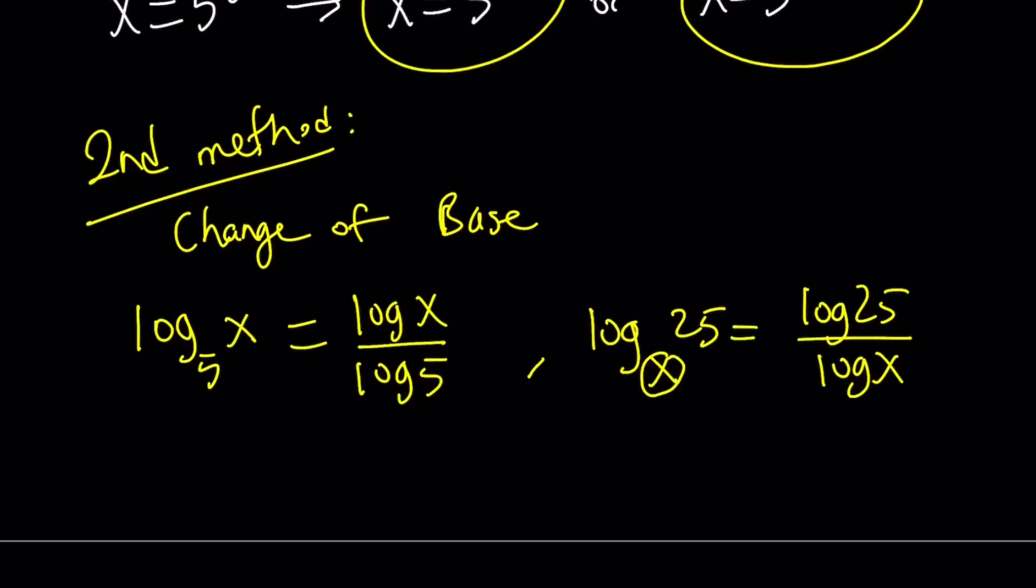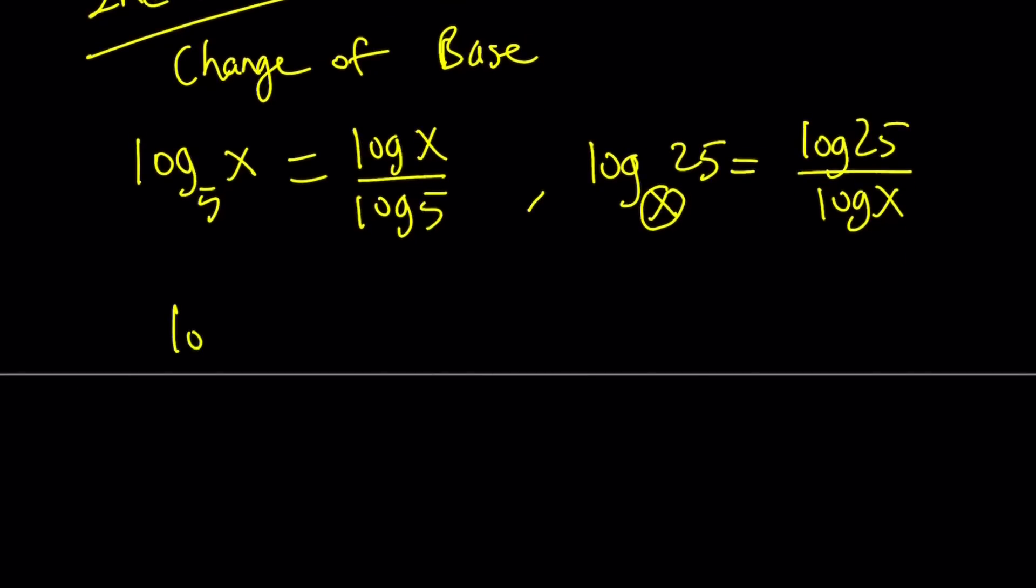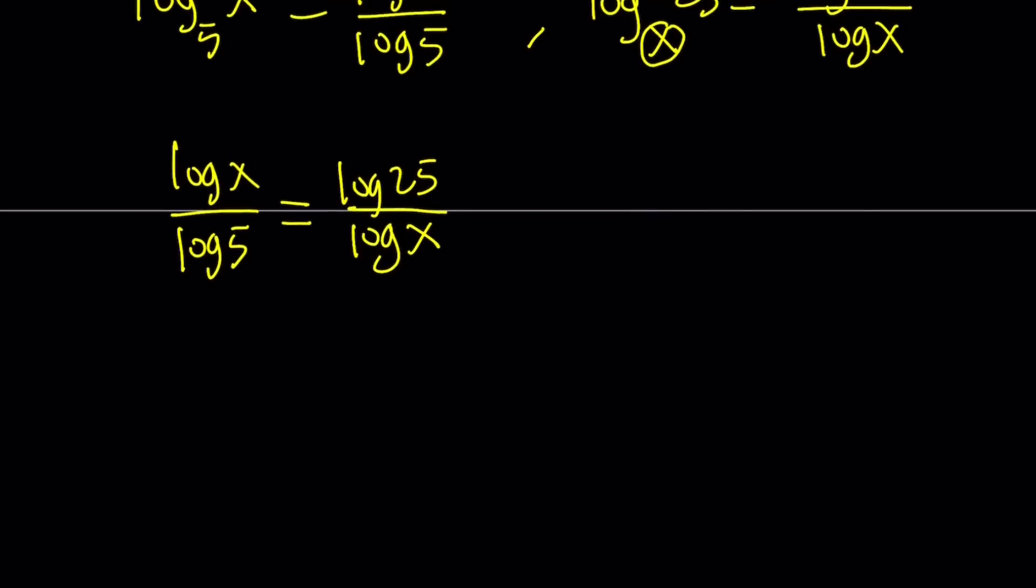So now we're going to do the following. Since these two expressions are equal, we're going to set them equal to each other. So we have log x over log 5 equals log 25 over log x. And from here, we can do cross multiplication. Log x times log x is going to give us log x squared. And then what about log 5 times log 25? You can't just multiply logs like that. The product of logs doesn't really make much sense unless you can convert one to another.